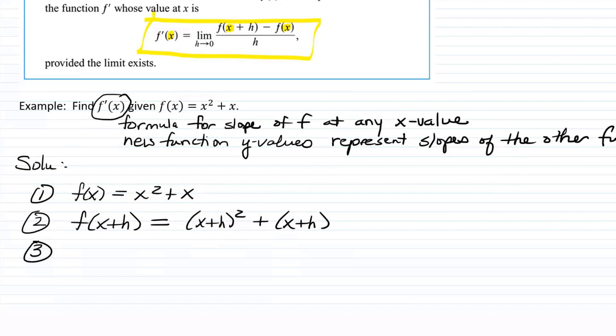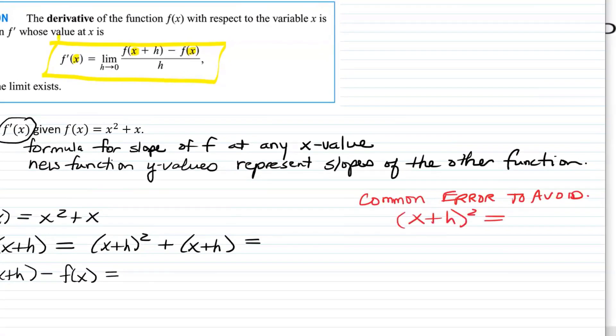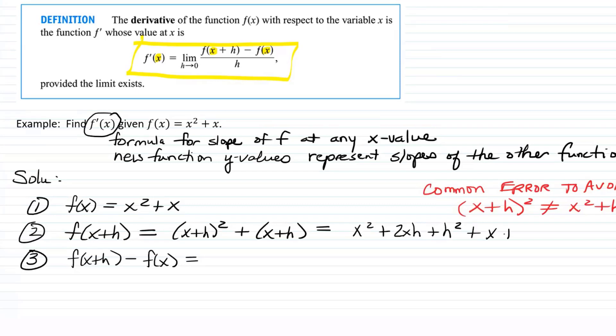We're just replacing the x in the function with x plus h. And then we're going to find f of x plus h minus f of x and simplify it a bit. So actually, let me finish simplifying f of x plus h first. So when you square x plus h, what are you going to get? When you square x plus h, the quantity, you are not going to get x squared plus h squared, right? Remember, this is a common error to avoid: x plus h squared does not equal x squared plus h squared. So foil it out x plus h times itself.